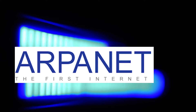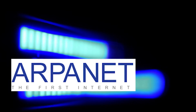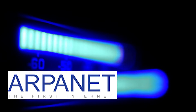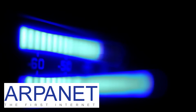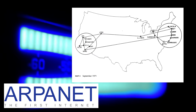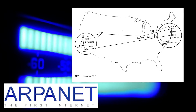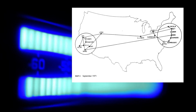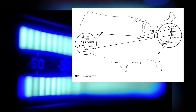ARPANET was the first real network to run on packet-switching technology, which was new at the time. On October 29, 1969, computers at Stanford and UCLA connected for the first time. In effect, they were the first hosts on what would one day become the internet.